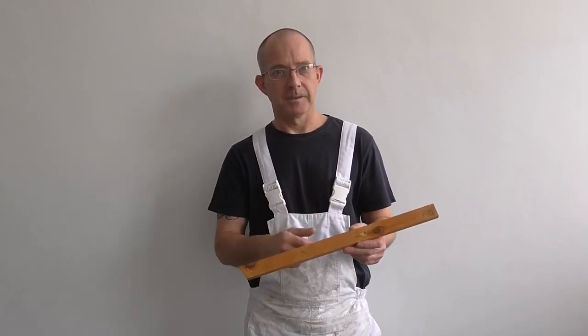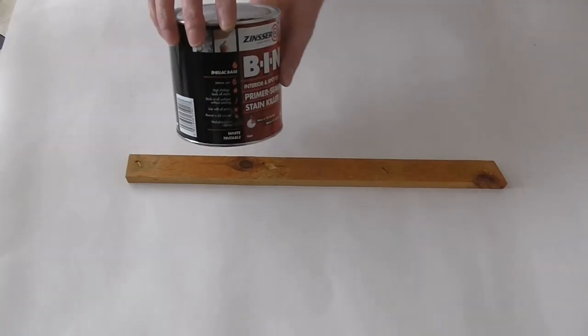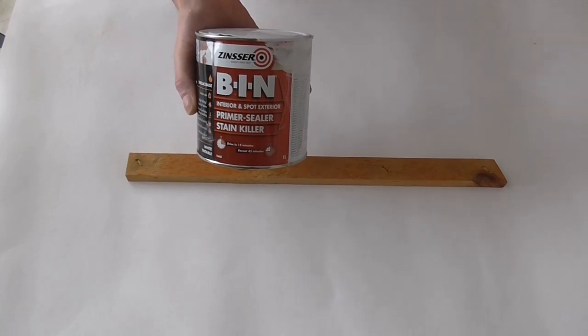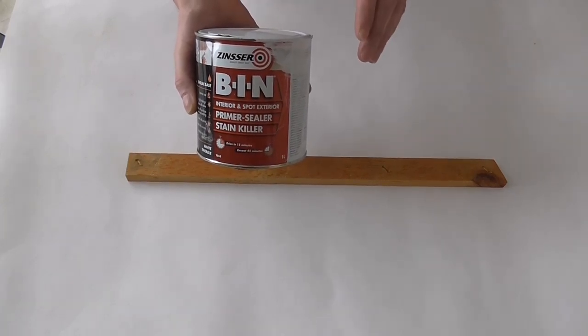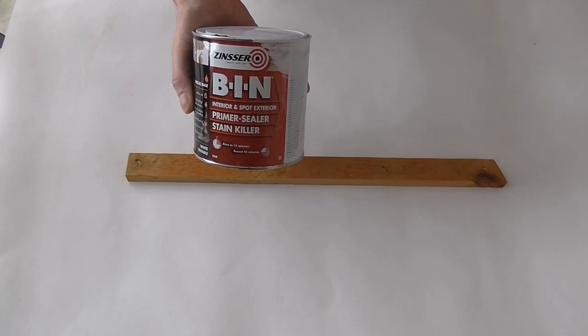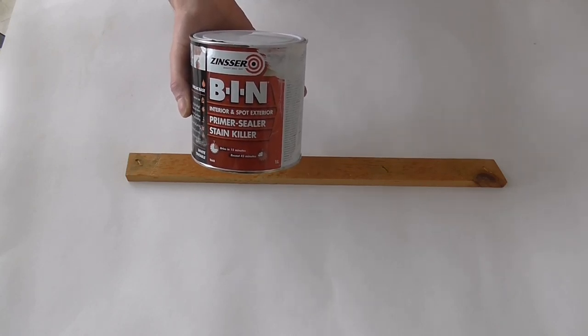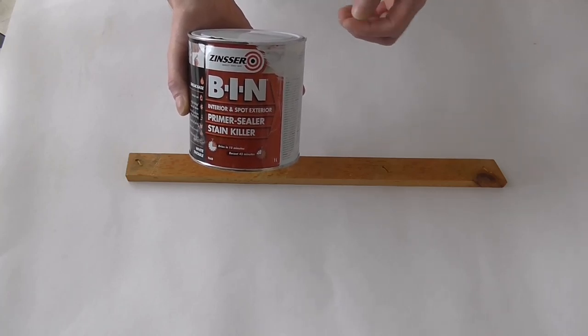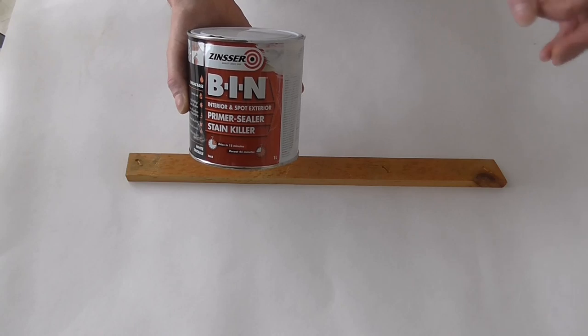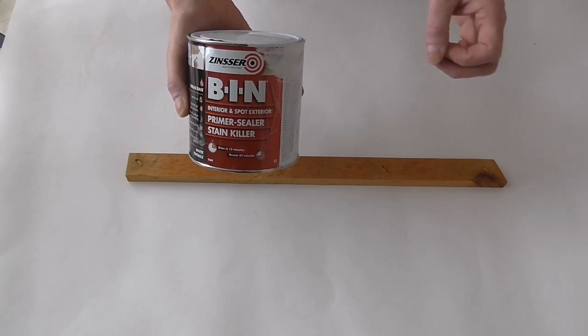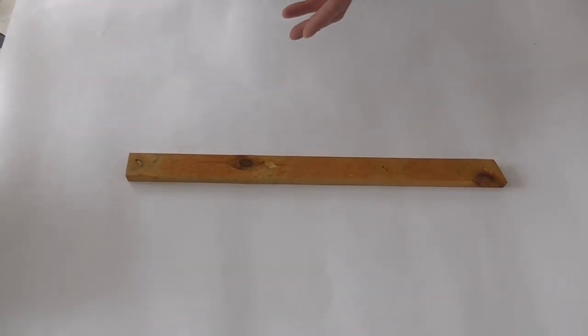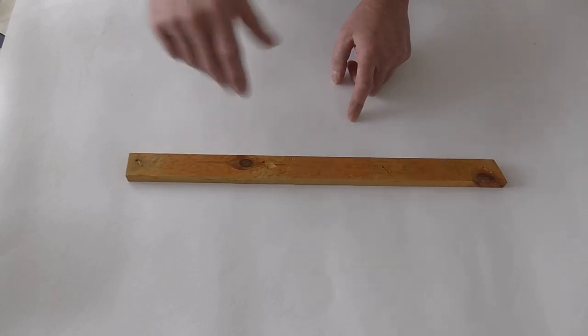Like I was saying, you can use bin primer but I've had a few problems on jobs with this. I've used it exactly as it says and I've spot primed and then I've put a full coat on. I've gone back to jobs and I can see the knots coming back through, so basically I've binned that. I don't use that anymore for sealing knots.